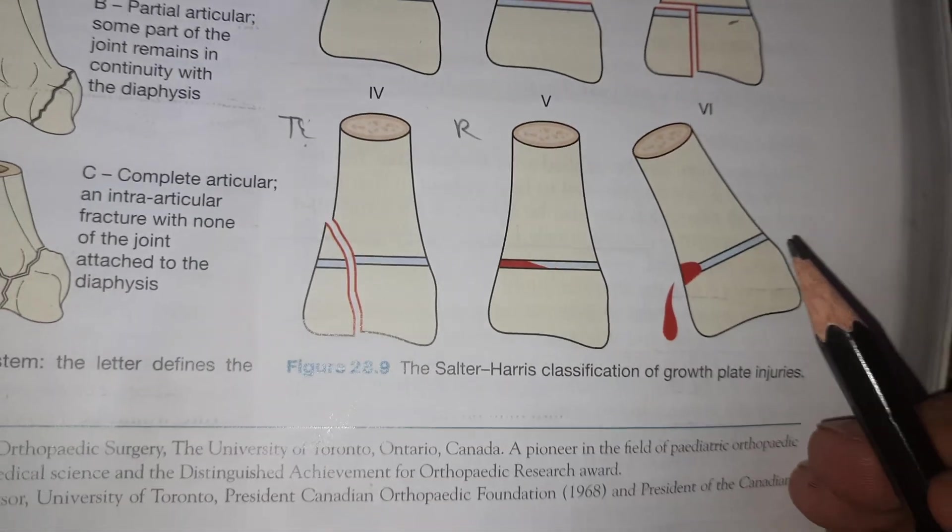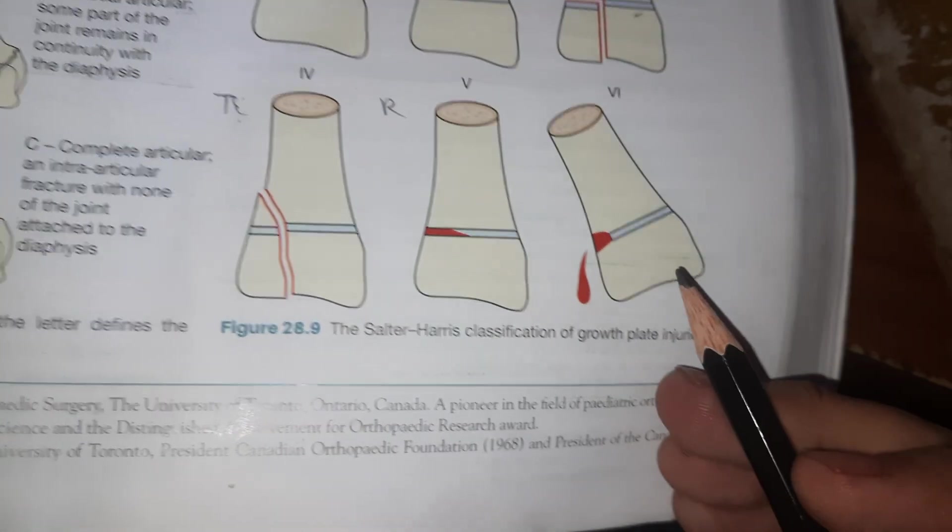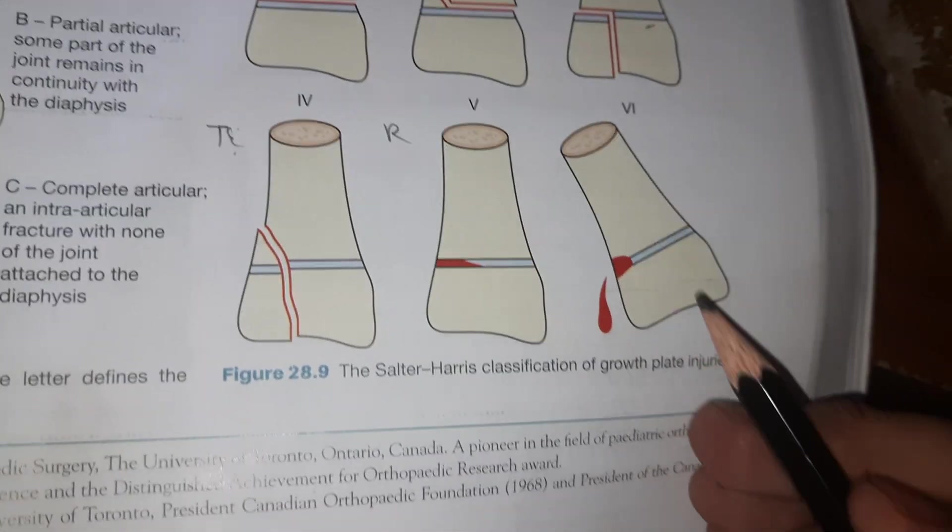In Type 6 injury, there is injury to perichondral structure by direct trauma. It is a rare injury with high chance of abnormal growth. Though it was added by Mercer-Ring, it is not an original classification.